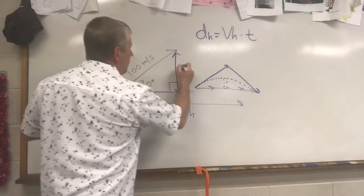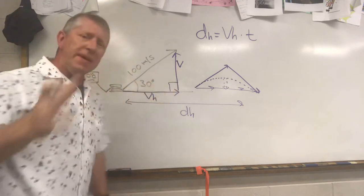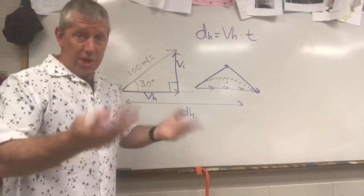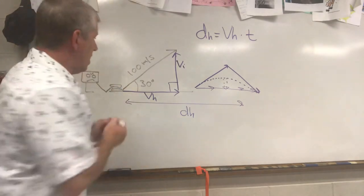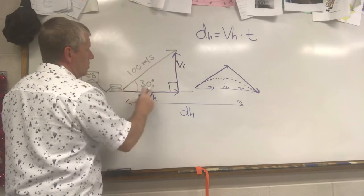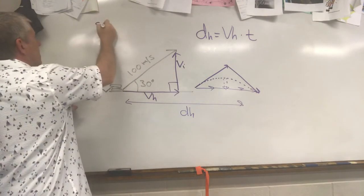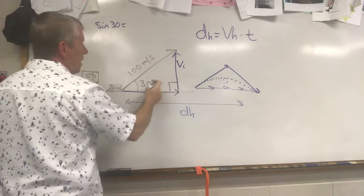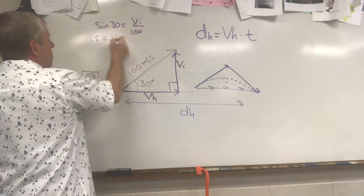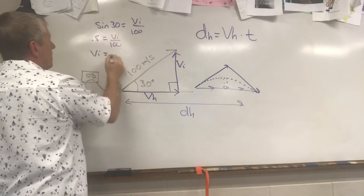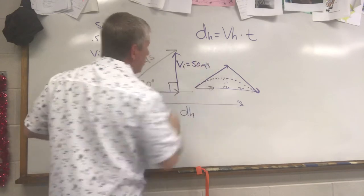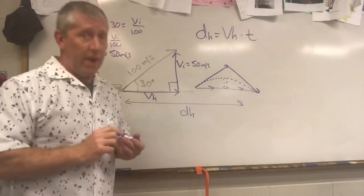By now, I hope that you remember, I'm going to call this VI for initial, the initial upwards velocity. It will change, but initially, there's some component that we need to know. I'm going to use sine to find this side. This is 30, and this is hypotenuse. So the sine of 30 is equal to VI over 100. The sine of 30 is 0.5. So 0.5 equals VI over 100. VI equals 0.5 times 100, which is 50 meters per second. This initial upwards velocity is 50 meters per second.